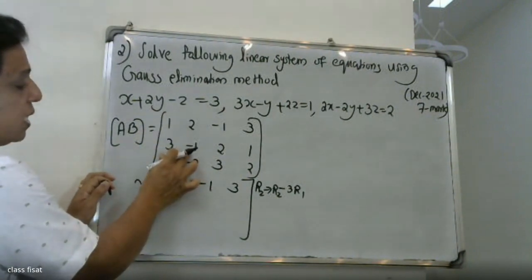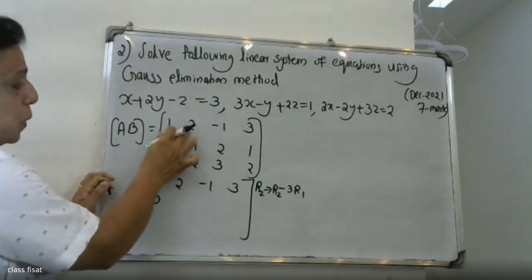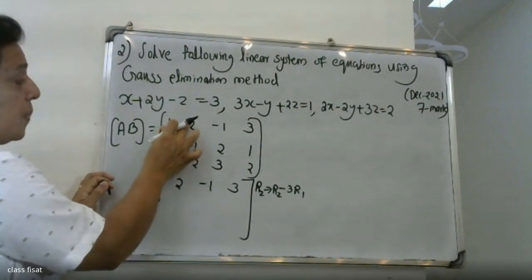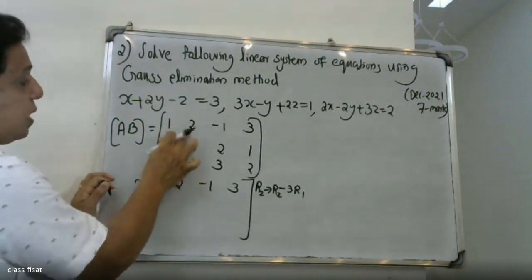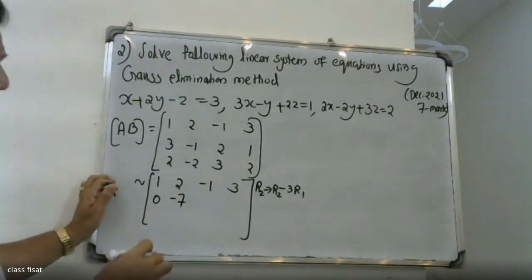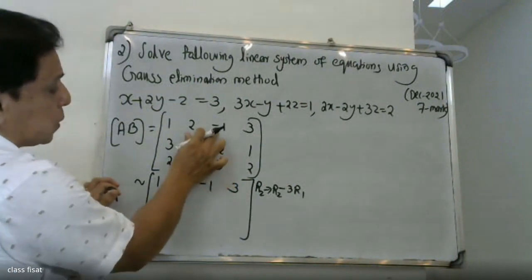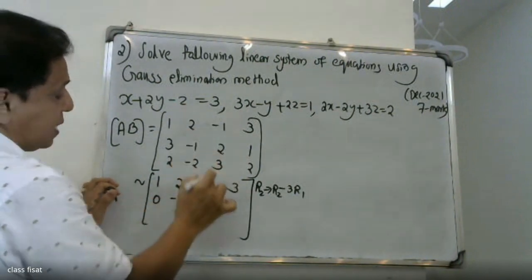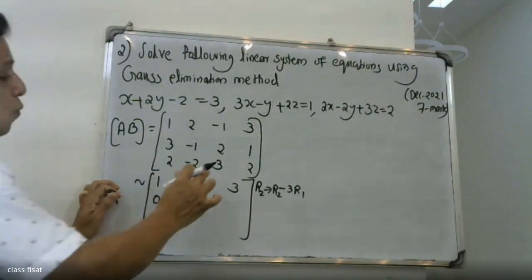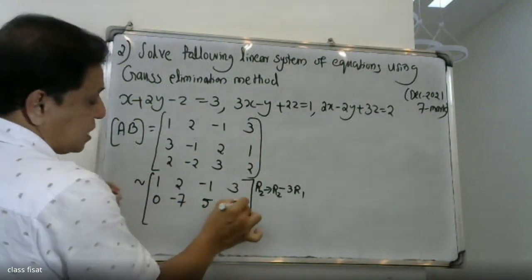For the second row: minus 1 minus 3 times 2 gives minus 7. Then 2 minus 3 times minus 1 gives 2 plus 3, which is 5. And 1 minus 3 times 3 gives 1 minus 9, which is minus 8. So R2 becomes 0, minus 7, 5, minus 8.